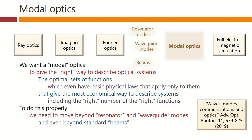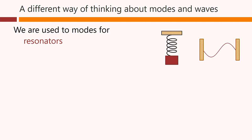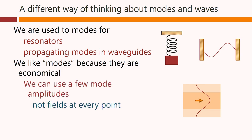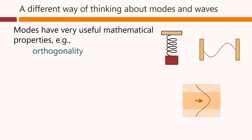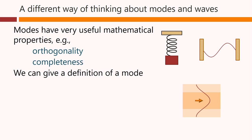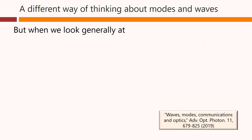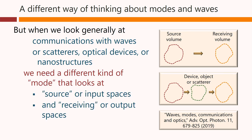We are used to modes for resonators such as a mass on a spring, or a standing wave resonator, and for propagating modes in waveguides. We like modes because they are economical — we can use a few mode amplitudes, not fields at every point — and we can often count modes meaningfully. Modes have very useful mathematical properties, for example orthogonality and completeness. A mode is an eigenfunction of an eigenproblem describing a physical system. But when we look generally at communicating with waves, or scatterers or optical devices or nanostructures between some source and receiving volume, we need a different kind of mode that looks at these source or input spaces and receiving or output spaces — modes in two spaces, not one space.